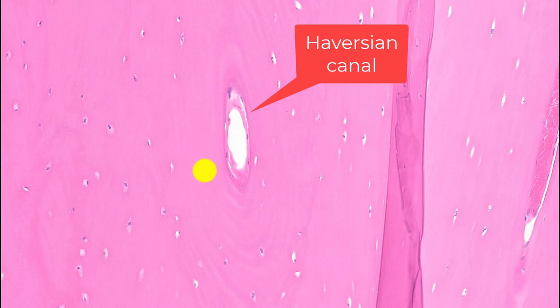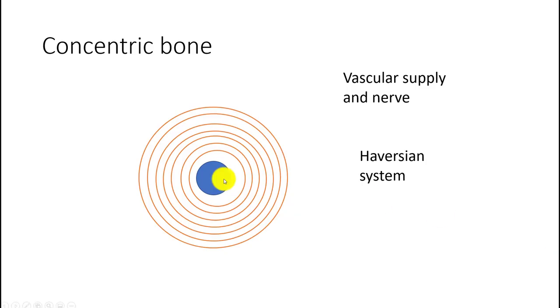The bone is actually organized in a concentric fashion, with the Haversian canal at the center containing a vessel, vein, artery, and nerve — that's how bone gets its blood supply. Arranged around that canal are osteocytes and bone in this concentric fashion. This is the Haversian system, and these individual concentric units are referred to as osteons. You are actually made up more of osteons than you are of neurons.